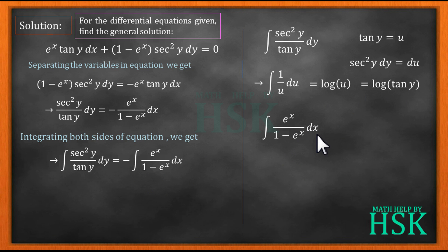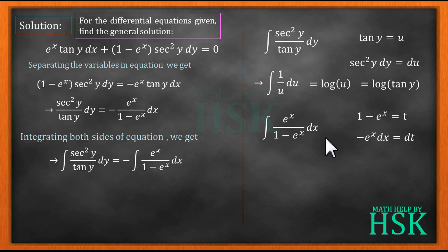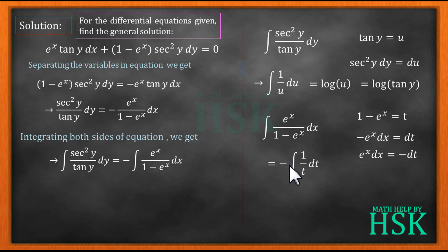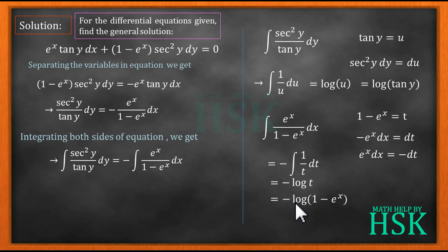For the second integral ∫ e^x / (1 - e^x) dx, I substitute 1 - e^x = t, so differentiating gives -e^x dx = dt, meaning e^x dx = -dt. The integral becomes -∫ 1/t dt, which equals -log|t|, or -log|1 - e^x|.